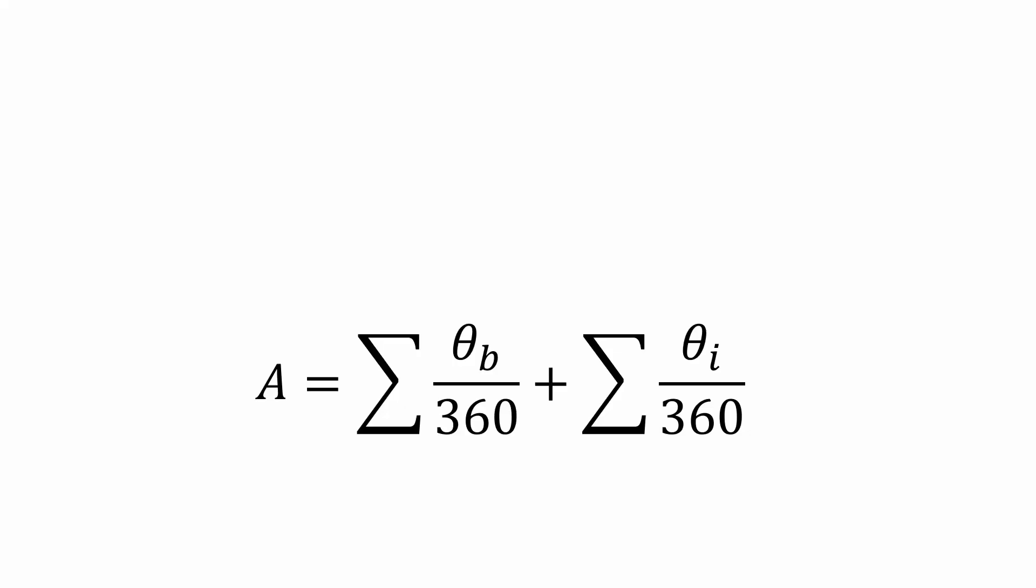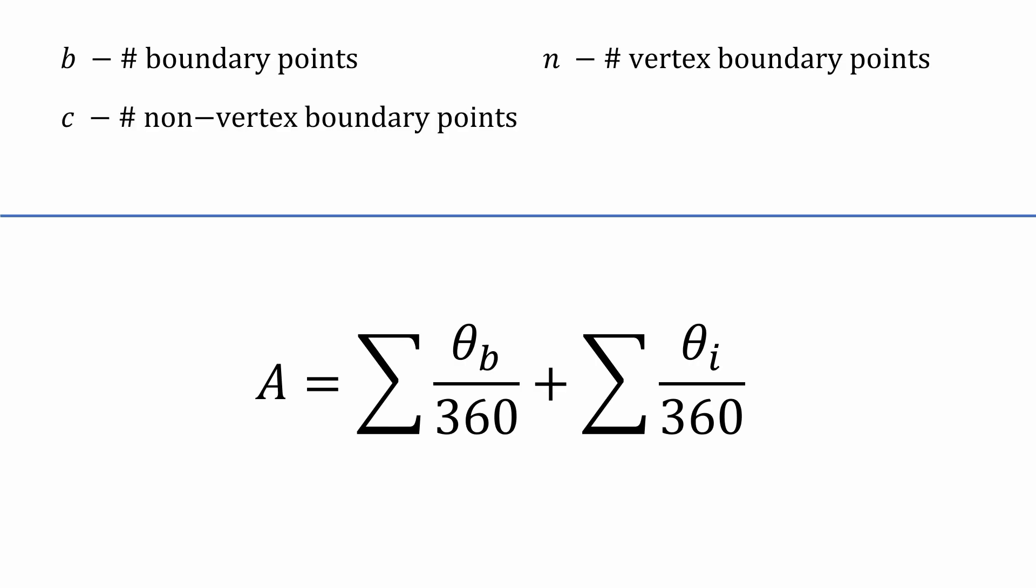This helper formula has been working its charm. But there's just one problem. We want the area expressed in terms of the total boundary points and internal points, not the angles. Let's define a few variables so that we can get the formula we desire. We know that b is the number of boundary points. We'll call the number of vertex boundary points n. And we'll call the number of non-vertex boundary points c. Finally, i will be the number of interior points.